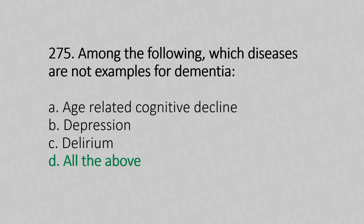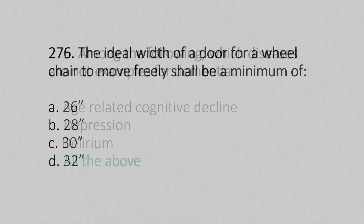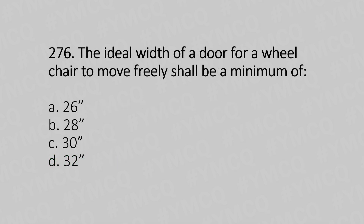Now let's move to question number 276. The ideal width of the door for a wheelchair to move freely shall be a minimum of: Option A, 26 inches; Option B, 28 inches; Option C, 30 inches; Option D, 32 inches. And the answer is Option D, 32 inches.